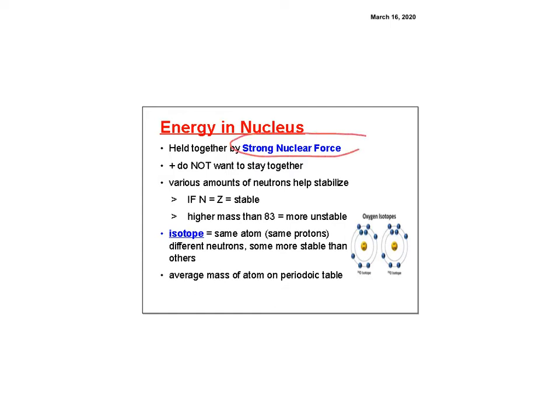The energy holding the nucleus together comes from the strong nuclear force — that's where atomic bombs and the sun's energy come from. Positive protons repel each other constantly, and neutrons help stabilize the nucleus. When N equals Z the nucleus is fairly stable, but at higher atomic numbers there are too many protons relative to neutrons. After atomic number 83, nuclei become unstable and start spontaneously falling apart.